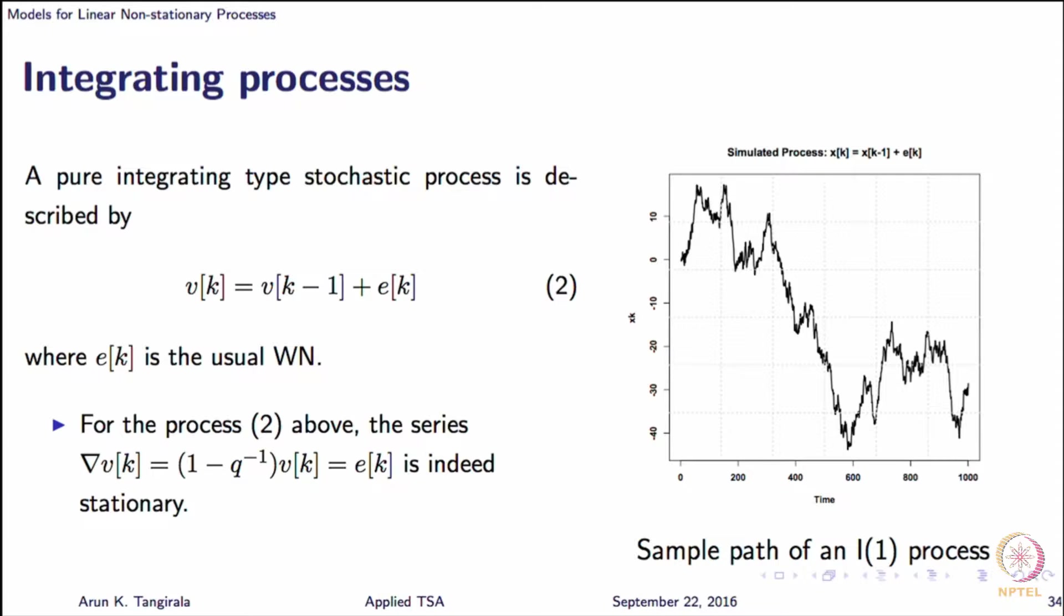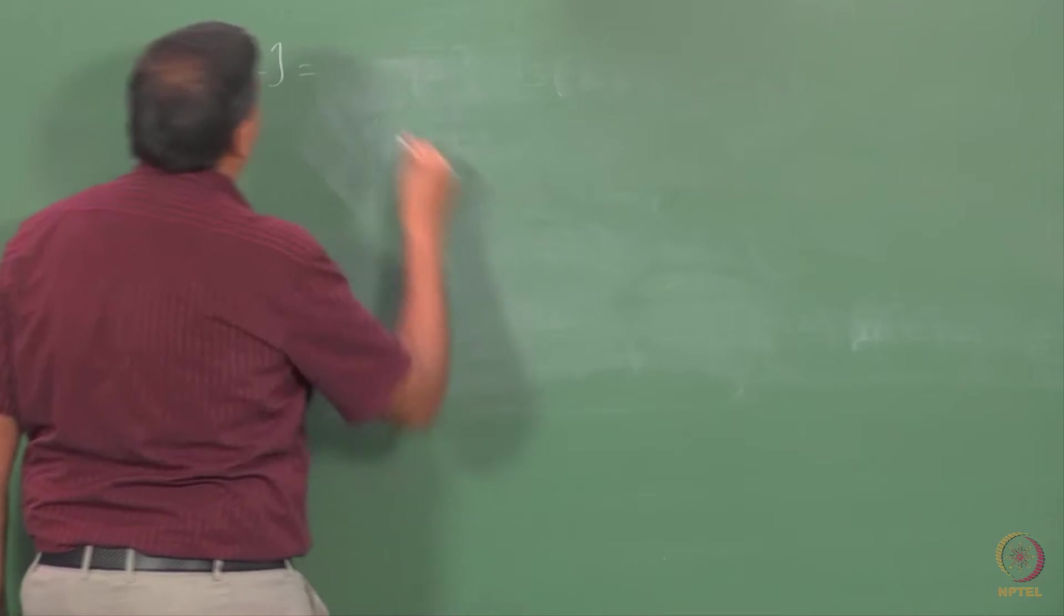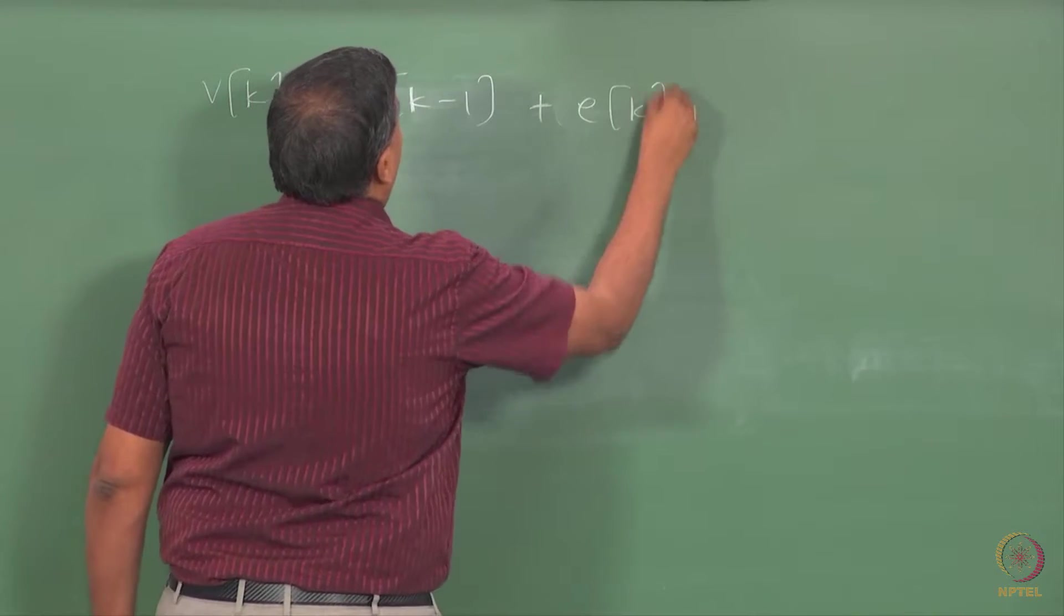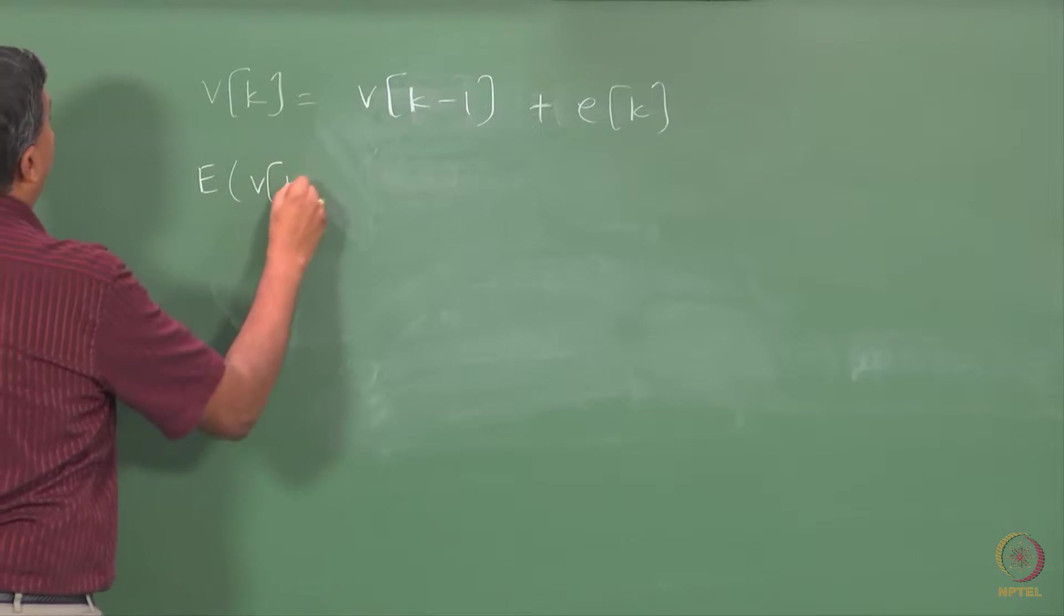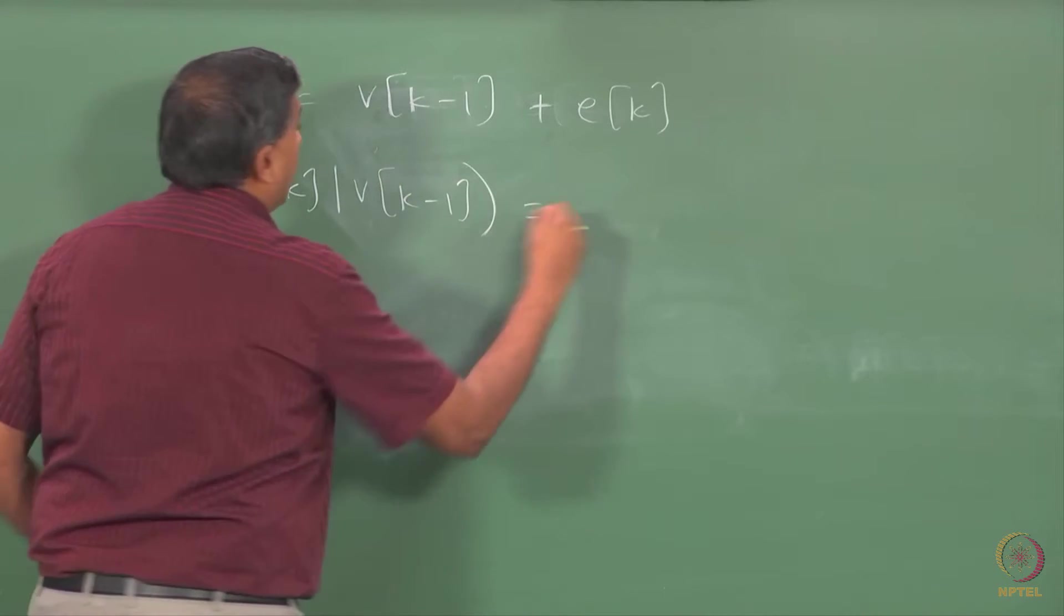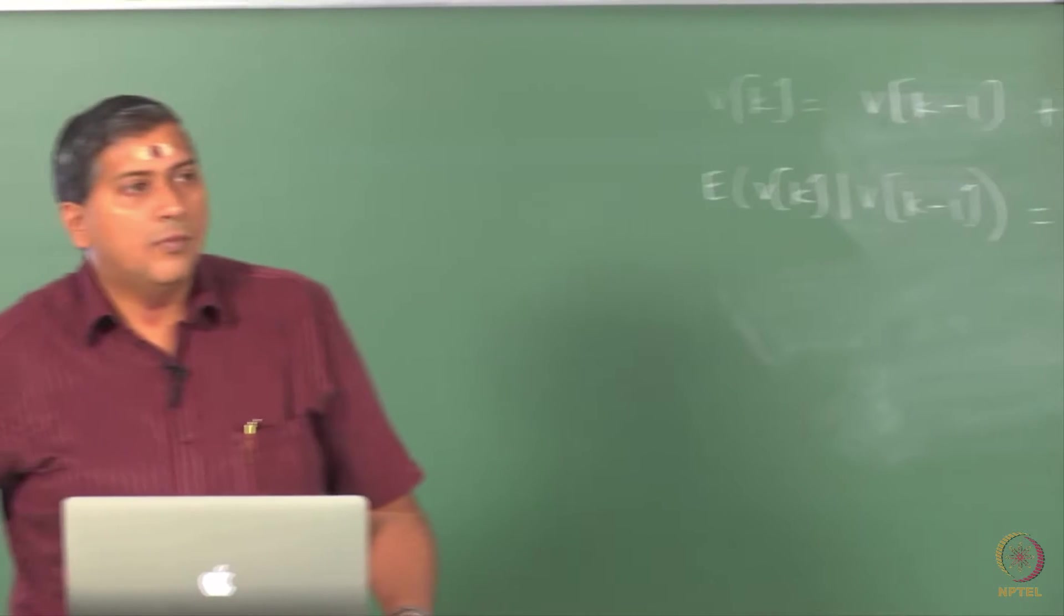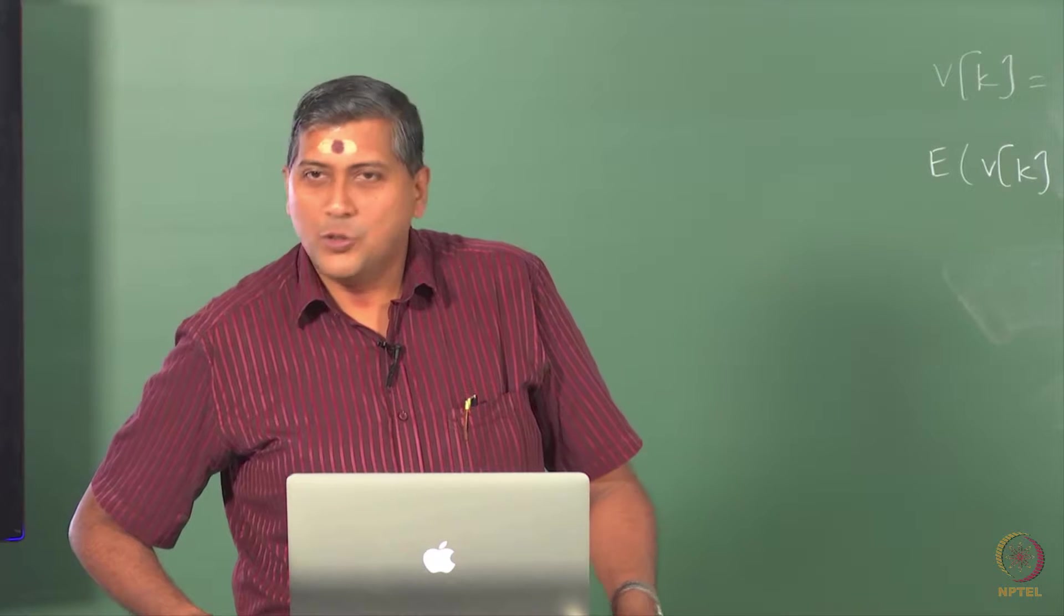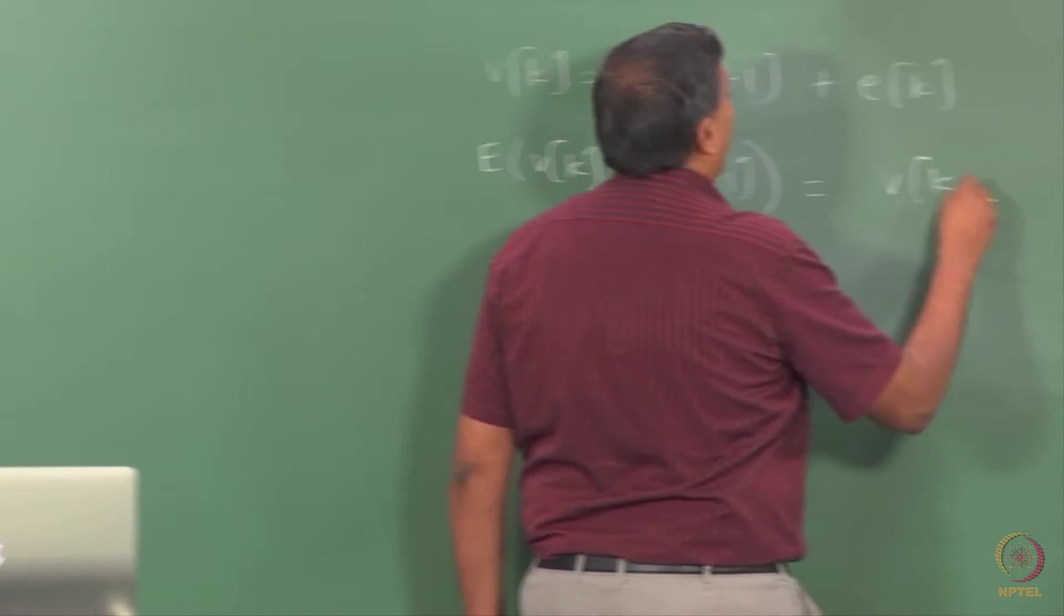We have already seen what an integrating series is. We have seen that V_K is, for example, an integrating process of first order. Pure integrating process is of this type. So that the expectation of V_K given V_{K-1} is... what is the conditional expectation? What is it? Sure, absolutely sure, good, correct. So V_{K-1}, right.